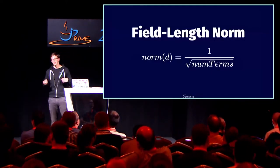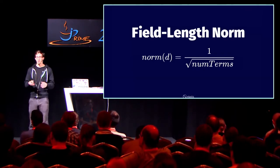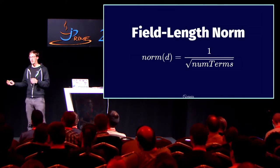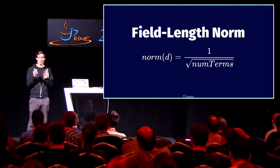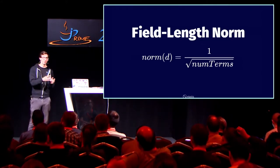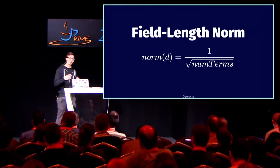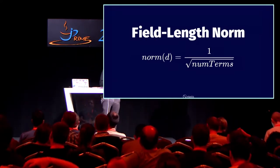The final thing that comes into play is the field length norm, which is very natural. If your search term appears in a short field, it is more relevant than if it appears in a very long field. I always use the example of searching through your emails — the subject is probably very short, and if your term appears in the subject, that is very relevant. Whereas in the long body of the email, if your search term just appears in the body, it's not that relevant. The field length norm takes that into account. You could also boost fields and say the subject is twice as important as the body — the length of a field is generally calculated into that already.